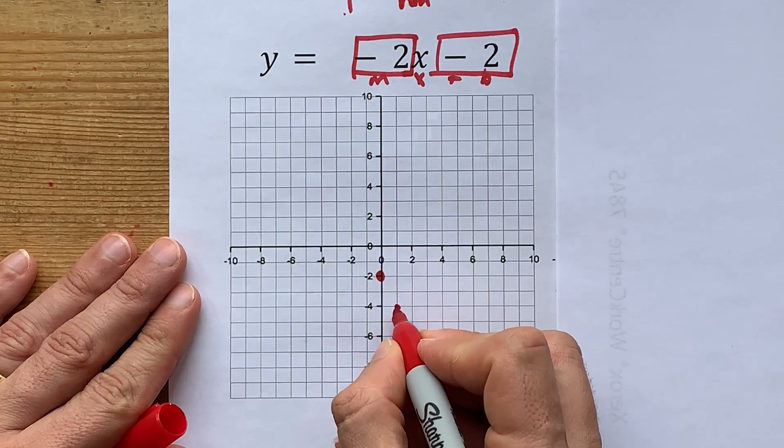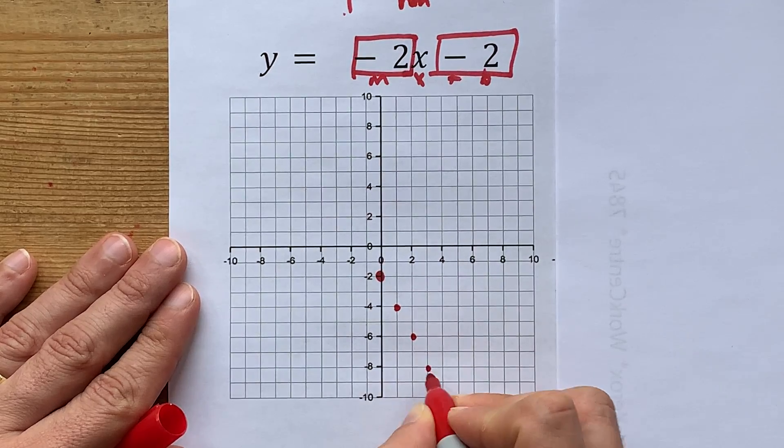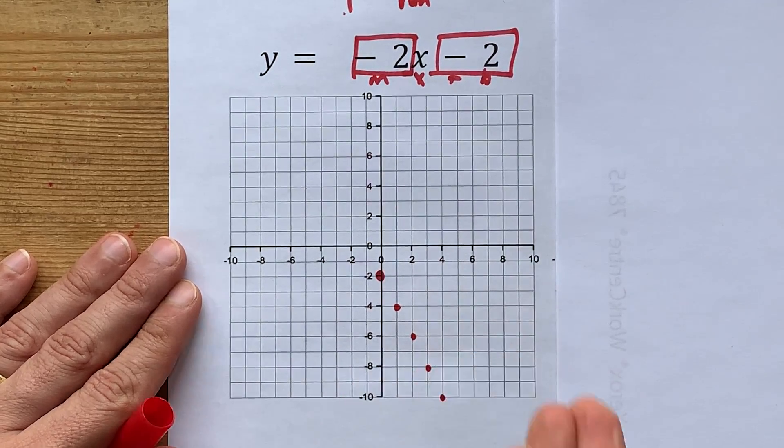From that point, down 2, right 1. From that point, down 2, right 1. Down 2, right 1. Cool.